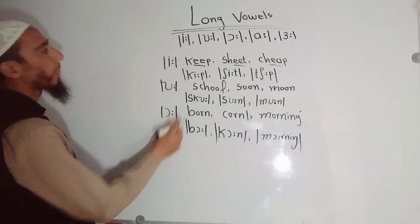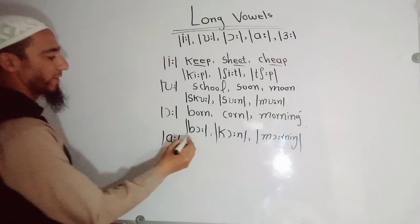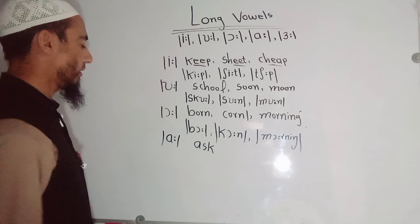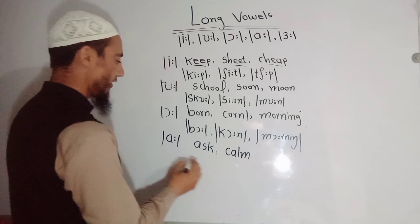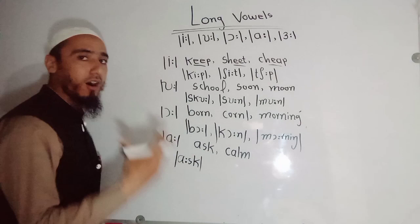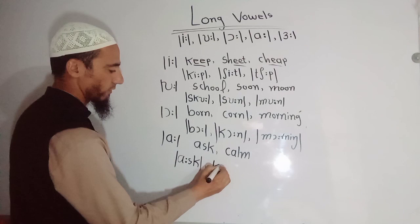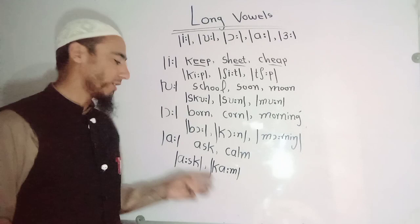Then we have the ɑː sound. Let me write some words — for example, 'ask.' Ask. And 'come.' These are written in phonetic transcription using the ɑː symbol. Ask and come. The last sound we have is the ɜː sound, which is mostly used in words like 'purse' and 'curse.'